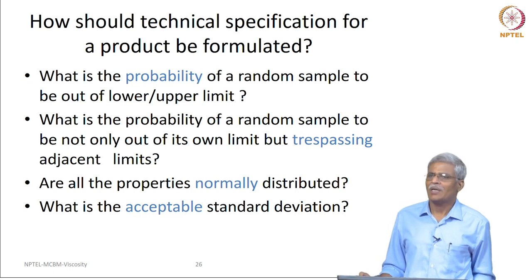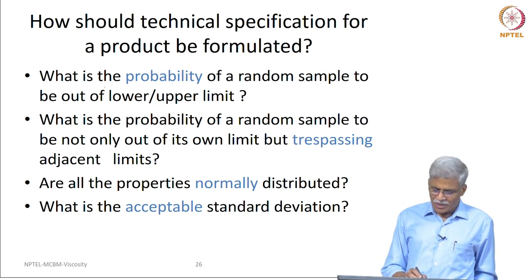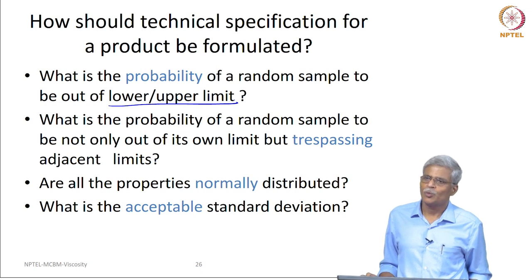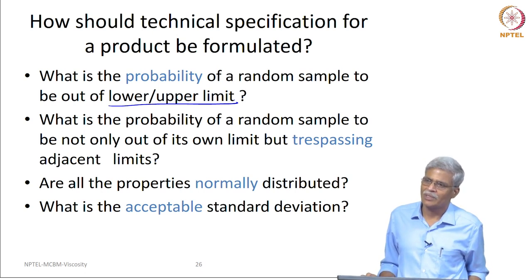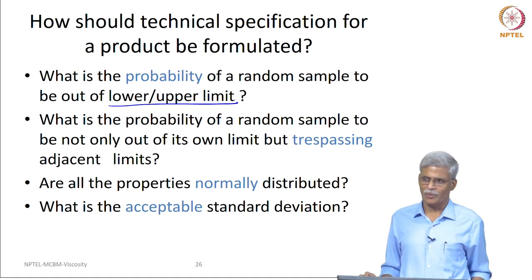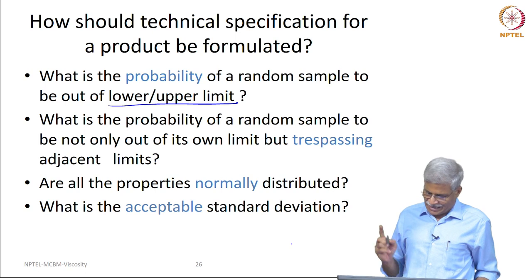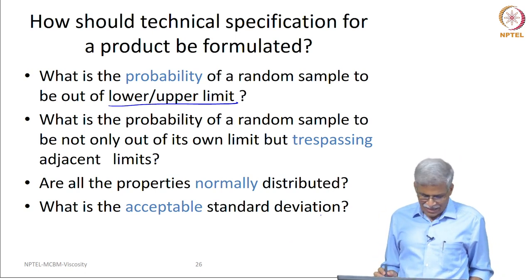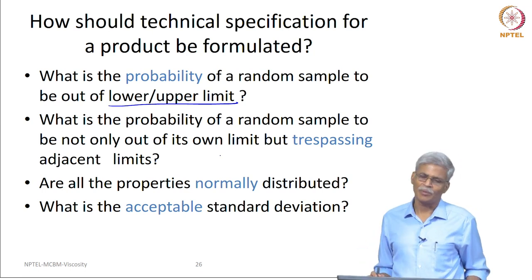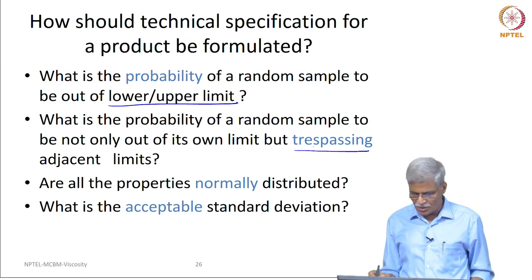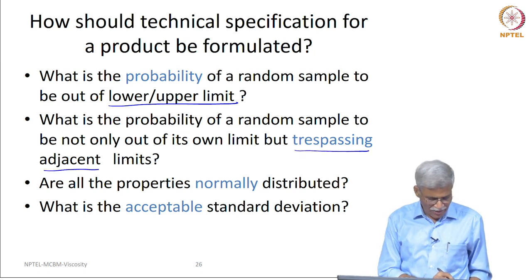This means we need to ask some very specific questions. The first question is: what is the probability of a random sample being out of the lower or upper limit? You produce a material based on viscosity grading — can it go below the lower limit or above the upper limit, and what is the probability? The next question is: what is the probability of a random sample not only being out of its own limit but trespassing into the other adjacent grade's limit?